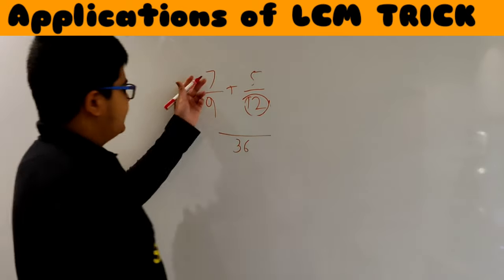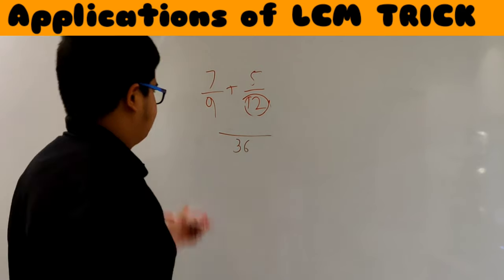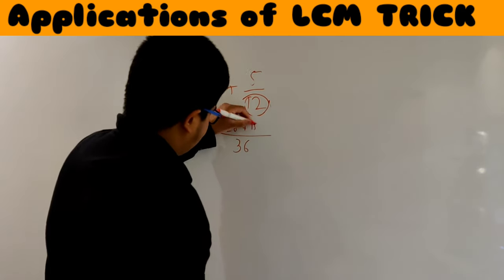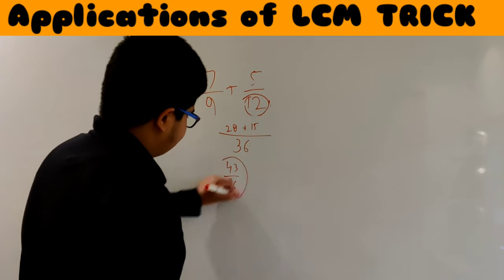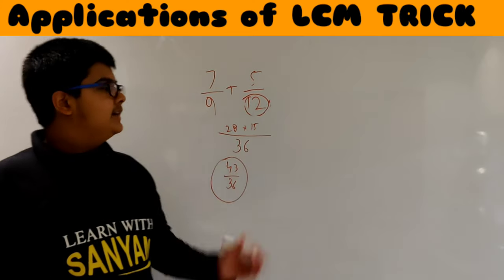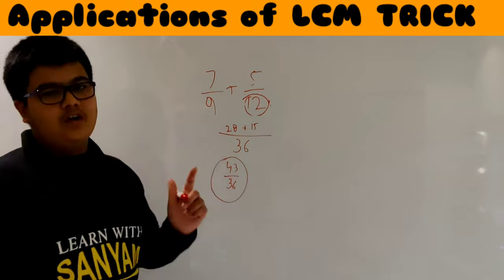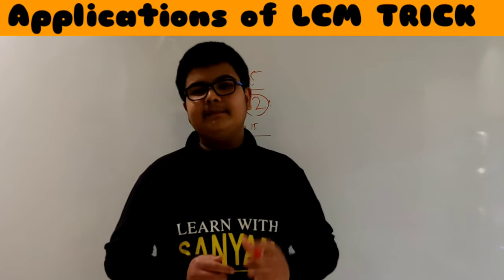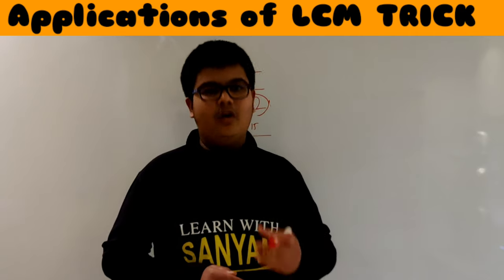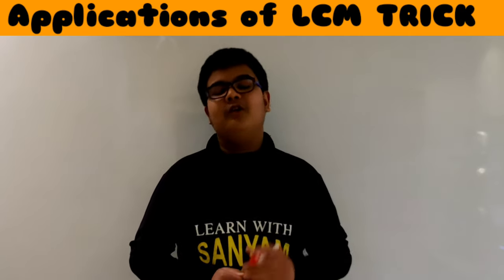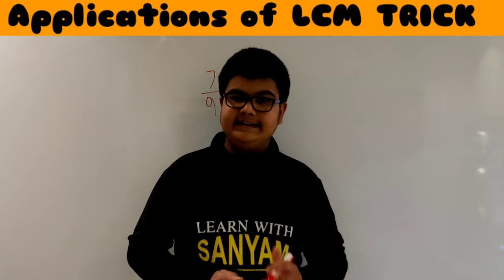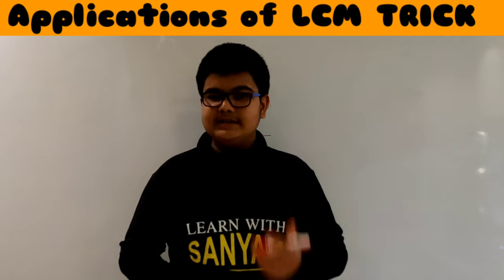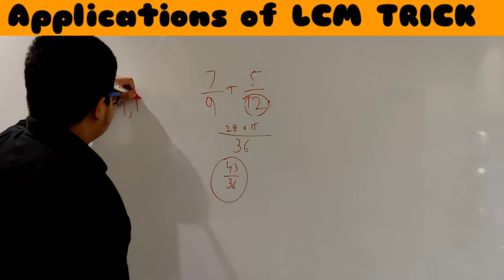Now we follow the next steps to complete the addition, and our answer becomes 43/36. By applying this trick, the first step of adding fractions — finding the LCM of the denominators — becomes much faster. This trick also applies to direct LCM questions; for example: what is the least number which, when divided by 9, 18, and 21, leaves no remainder? We simply find the LCM of 9, 18, and 21, and that is our answer. Do subscribe, like, and share this video.